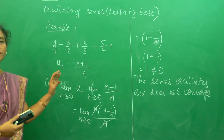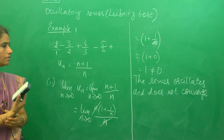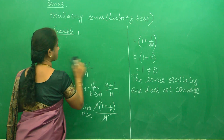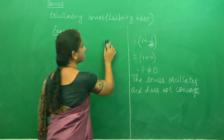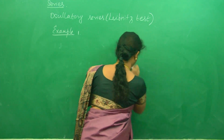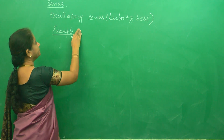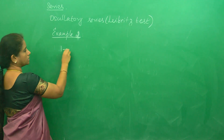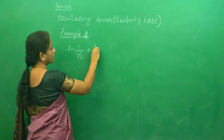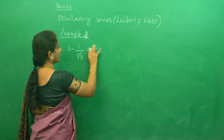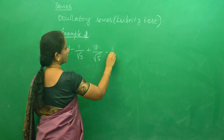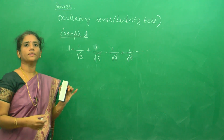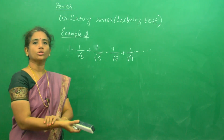So this is how, using Leibniz test, you identify whether the series is convergent or not. We will do two more problems. Now we are going to test the convergence of 1 − 1/√3 + 1/√5 − 1/√7 + 1/√9 − etc. This appeared in Anna University May 2013 paper.